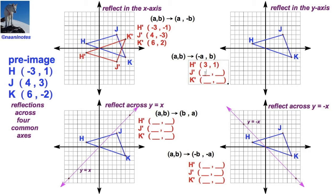4, 3 for j. Negative 4. And the 3 remains. For k-prime, I look at the k. I take the opposite of 6. That's negative 6. The negative 2 remains the same.